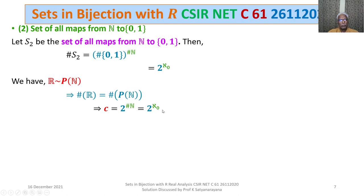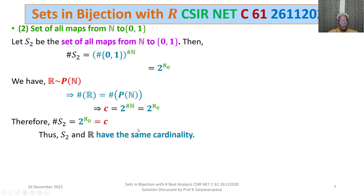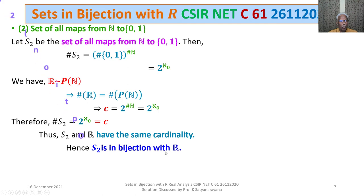Therefore, the cardinality of S2 equals 2^ℵ₀, which equals C. So S2 and R have the same cardinality, therefore S2 is in bijection with R. Thus Option 2 is true.